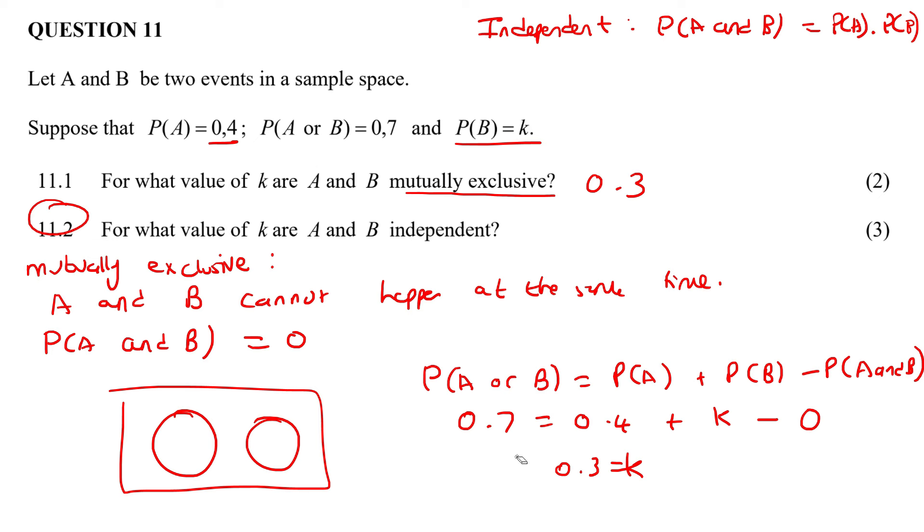So what we'll do is, once again, we'll use this formula. And we'll still say 0.7 over here. We'll still say 0.4. We don't know what that one is, but now for this part, we can say that it's the probability of A multiplied by the probability of B, which will be 0.4 multiplied by K.